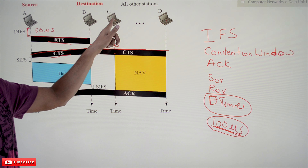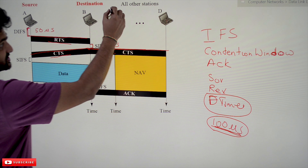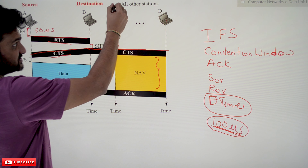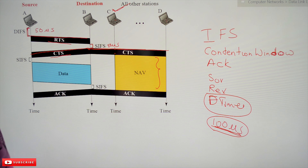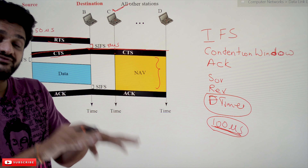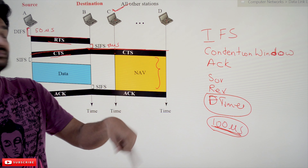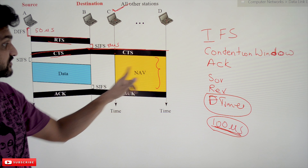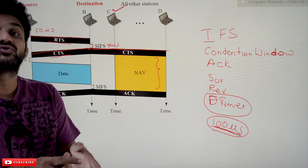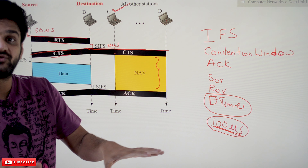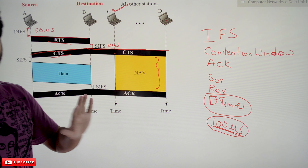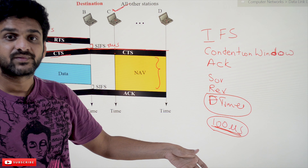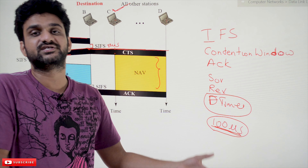If another system — say system C — wants to transmit data, it will check the Network Allocation Vector. If the NAV timer is still counting down, it will not attempt to transmit, thus avoiding collision. The collision is completely avoided because none of the other systems are sensing the channel during that allocated time, eliminating any possibility of collision.